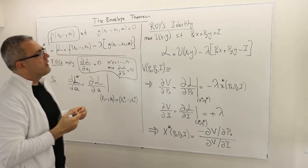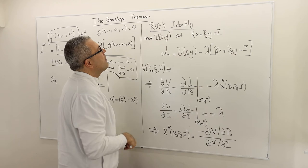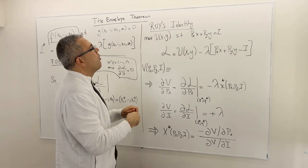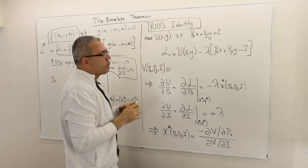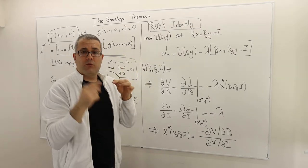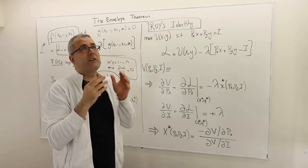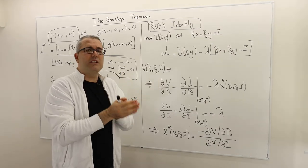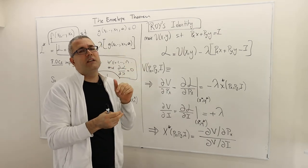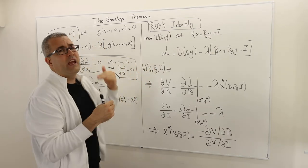Now let's apply all of this in the context of indirect utility and derive what's called Roy's identity. Roy's identity basically tells us what the optimal x value — the optimal demand — should be with respect to the indirect utility function. Can we derive the optimal demand by using the indirect utility function? The answer is yes, thanks to Roy's identity, which is simply an application of the envelope theorem.